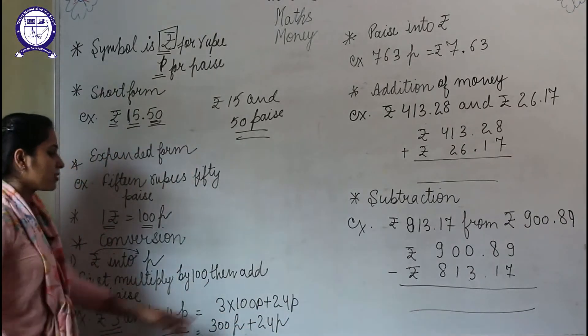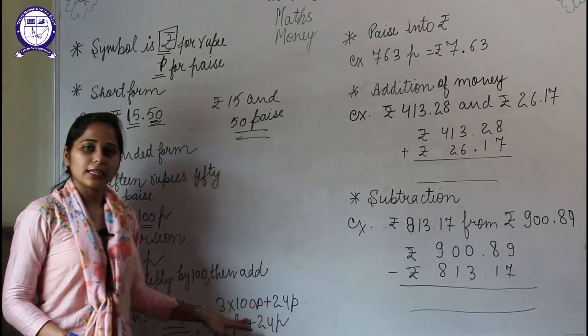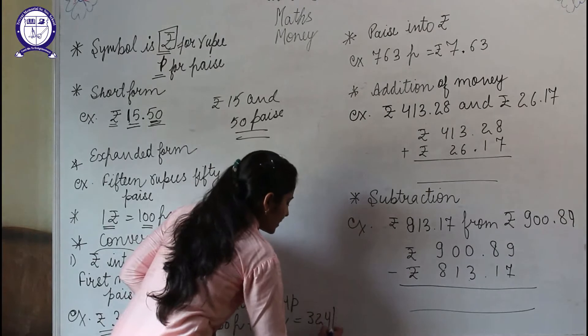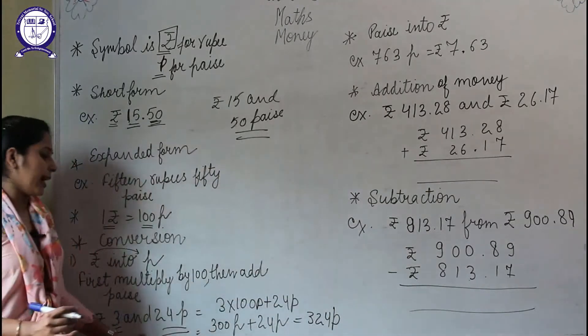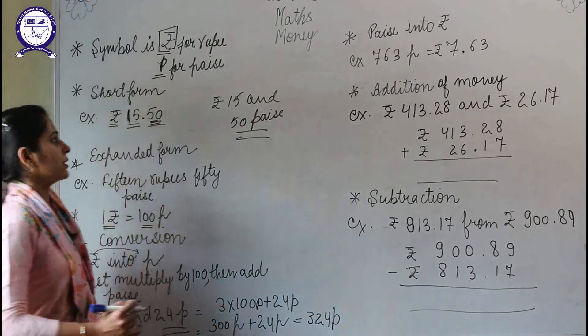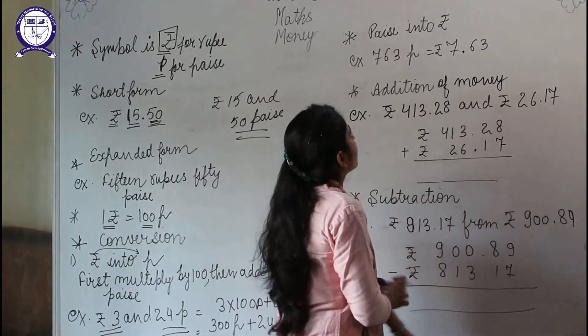add the paise portion that is 24 to the 300 paise, so we'll get the answer as 324 paise. This means ₹3 and 24 paise equals 324 paise. Now, paise into rupee—we need to convert